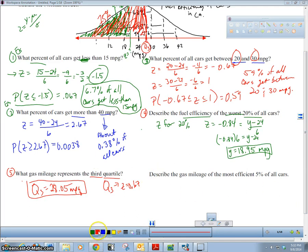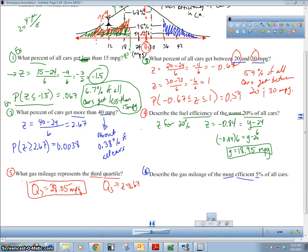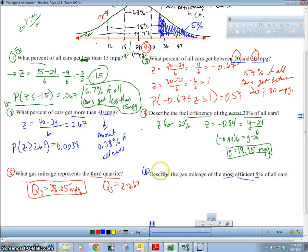Let's use this to do the last one here. Describe the gas mileage of the most efficient five percent of all cars. So we're talking about the top five percent, like these guys right here. Now you would think that this right here is five percent because this is the 95 percent rule, but that's not the case. Remember that that 95 percent corresponds to both this part right here and this part right here. So we're actually a little bit more than that. It's probably about somewhere right here. So that's five percent, the upper five percent.